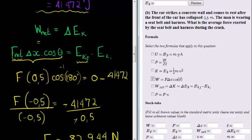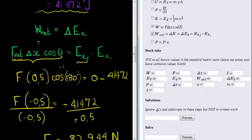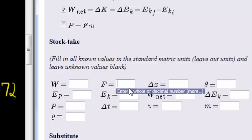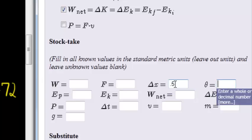So we use this one, as well as the fact that the net work is equal to the change in kinetic energy. So those are the two formulas that we used. What were the values? Well, we worked out the, you can put in the amount of work done if you want to. The force is what we have to calculate. We know that is 0.5. Then we know that the angle between them was 180 degrees.